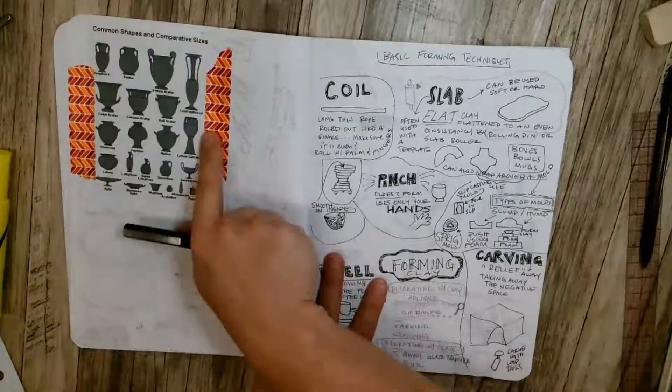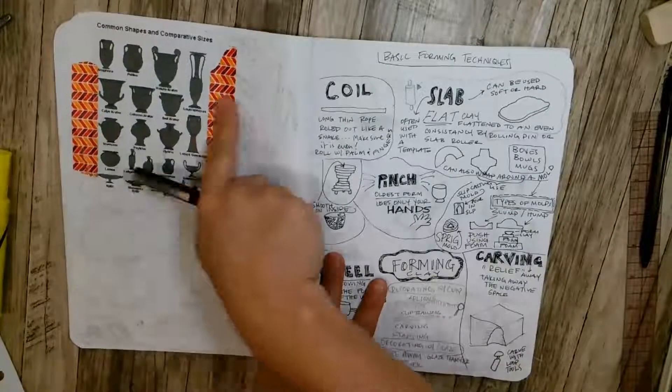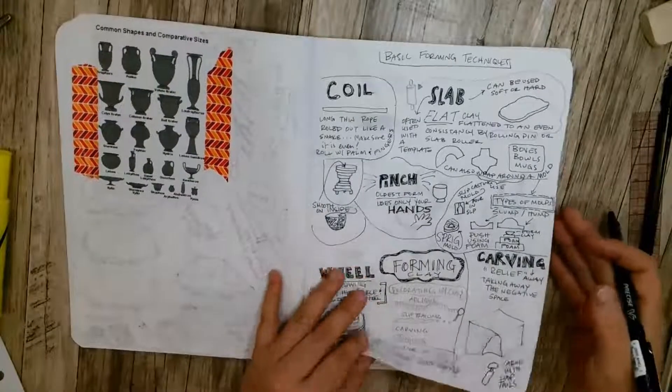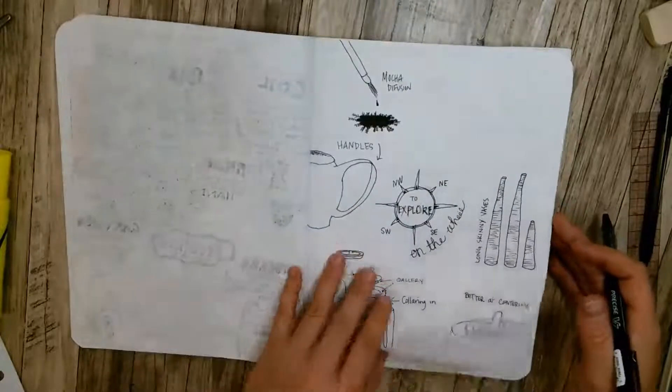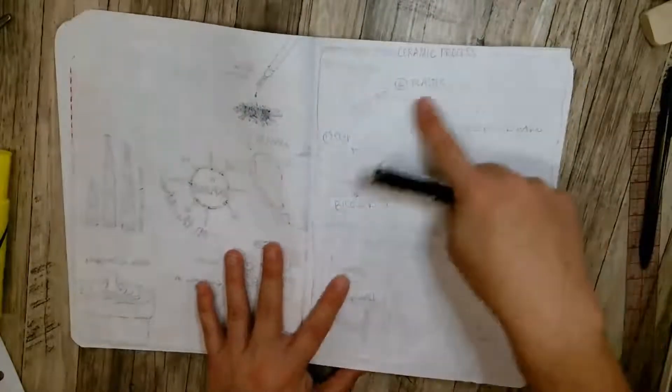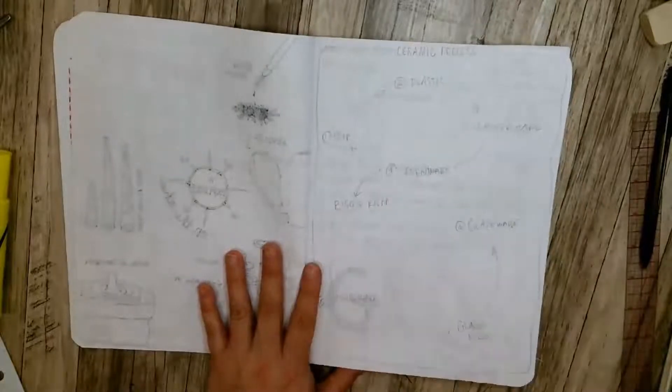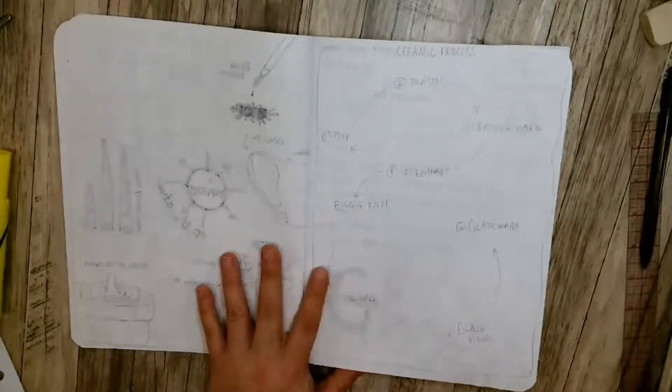You can see I have printed things out and taped them in, or you can use glue stick. For example, this here is some notes that I was planning for my Art 1 class.